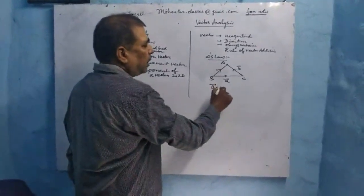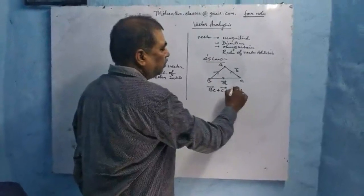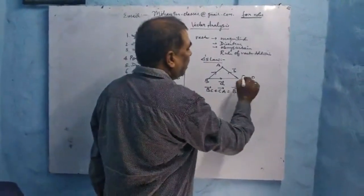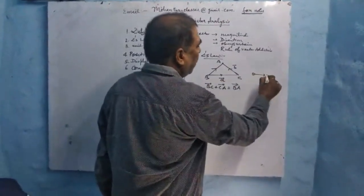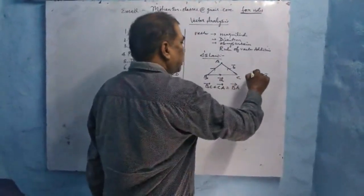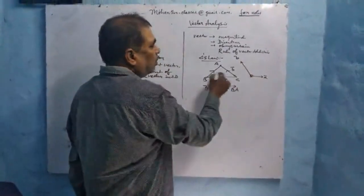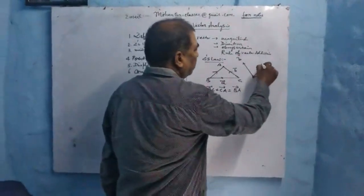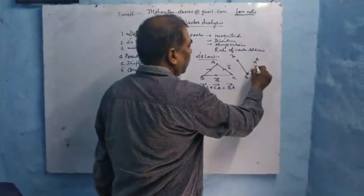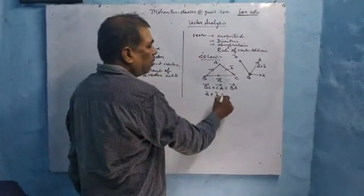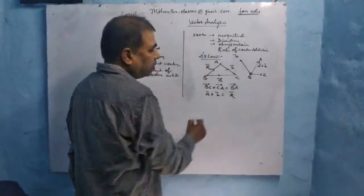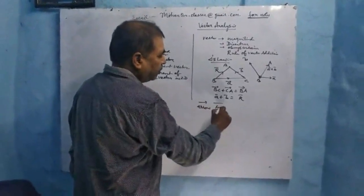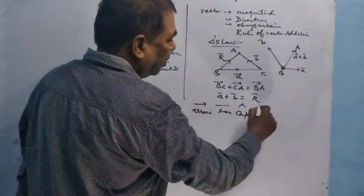So, BC plus CA is equal to BA. This can be represented experimentally. Consider a stone: vector quantity A is acting horizontally parallel to vector A, and vector B acts parallel to vector B on this stone. The resultant of both vector quantities will act along BA. So A plus B is equal to R. The notation of a vector is an arrow, bar, cap, or bold letter.